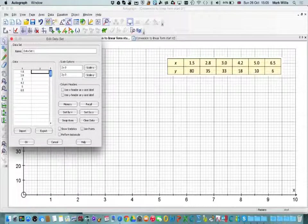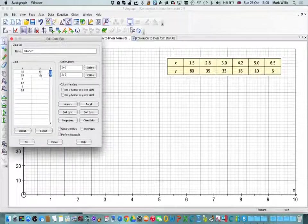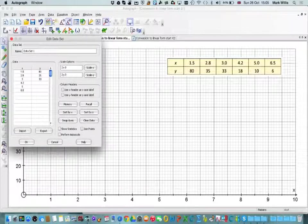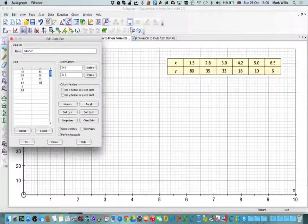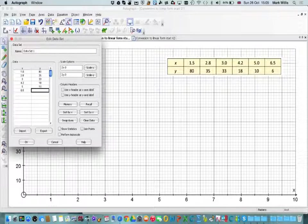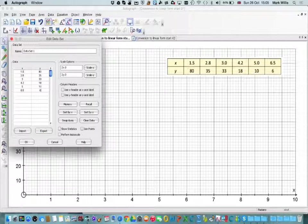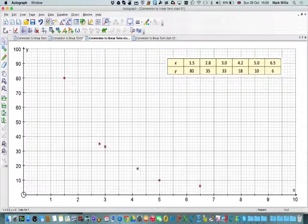Now I'll put in the y-values which is 80, 35, 33, 18, 10, and 6. I don't want the Performed Autoscale and now I just press OK and it puts a set of points.